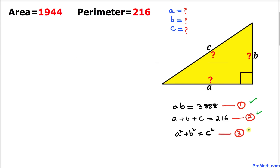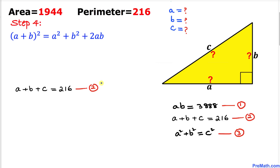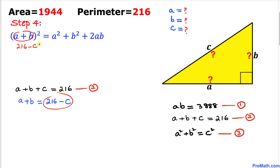Here's our next step. Let's recall the well-known formula: (a + b)² equals a² plus b² plus 2ab. Now, from equation number two, if I move c to the other side, we get a plus b equals 216 minus c. So I'm going to replace (a + b) with (216 minus c), and a² plus b² with c² from the Pythagorean theorem.